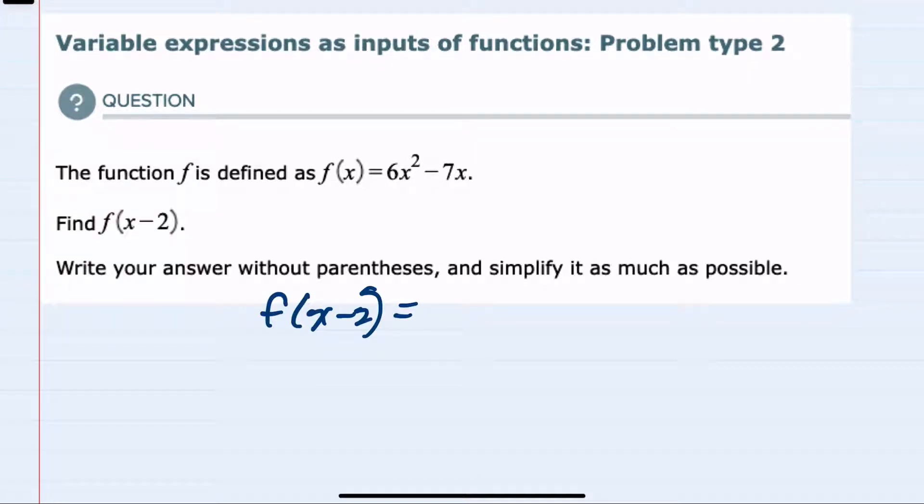And to do so I will be replacing the x in f of x. Each time it occurs I will replace it with x minus 2. So we will have 6 times, instead of x we would replace x minus 2, and that first x was squared so we're squaring it, minus 7 times x. And again here we replace the x with x minus 2. So we've replaced each of these x's with x minus 2.